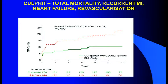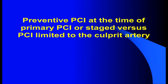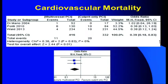Similar results were obtained from the CULPRIT trial, where total mortality, recurrent myocardial infarction, heart failure, and revascularization were significantly less in patients who underwent complete revascularization at the time of STEMI. The green bar shows reduction in all these parameters, favoring angioplasty of the non-culprit vessel. Meta-analysis comparing culprit vessel angioplasty versus multi-vessel PCI — from major studies including Di Mario, Politi, and Waldo — all significantly showed a reduction in cardiovascular mortality, favoring multi-vessel PCI.